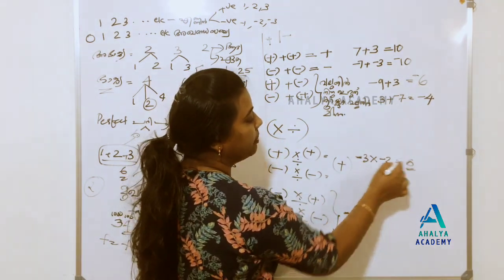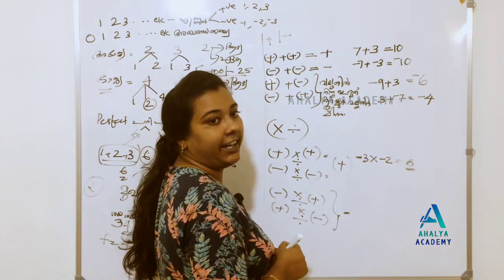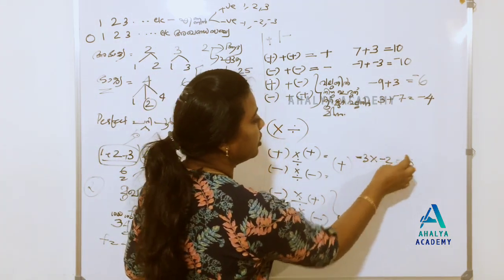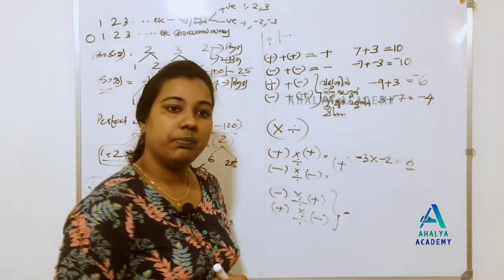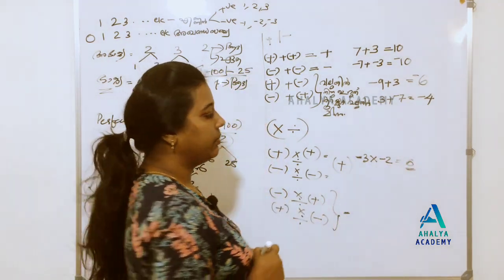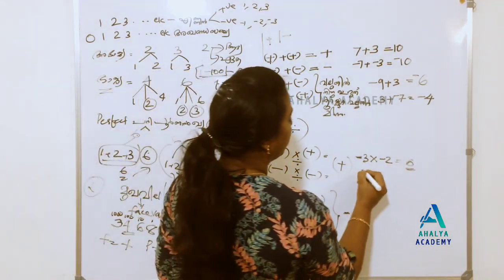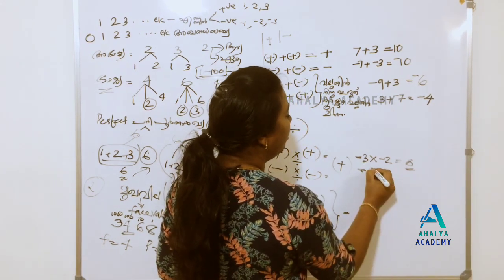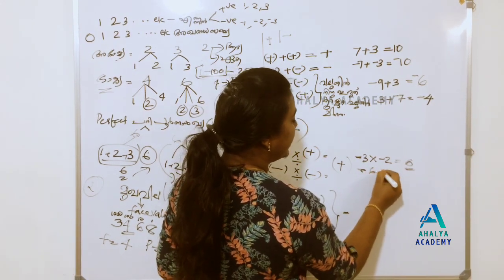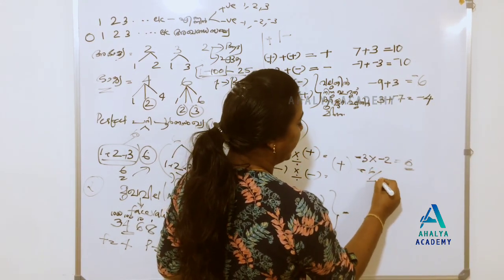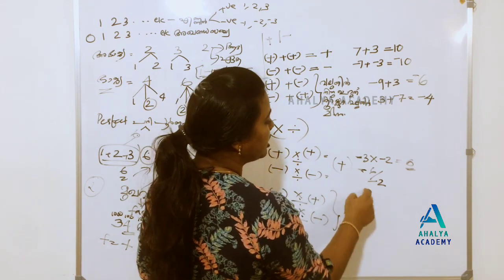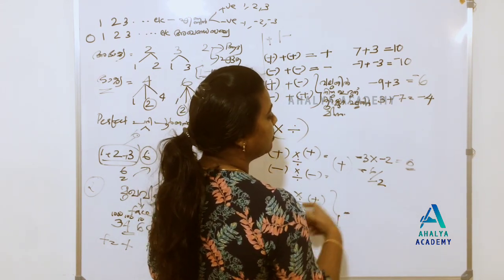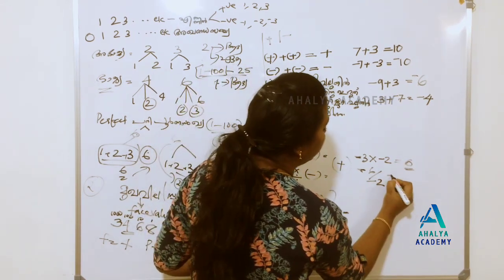Now, 3 times 2 equals 6; minus 6 is equal to minus 6. So we multiply this minus and minus. And the division: minus 6 divided by minus 2 — if we cancel this minus and minus, 6 by 2 is equal to 3.